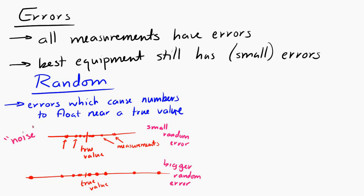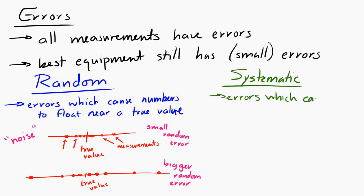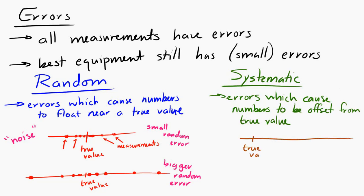The other category — systematic errors — are the errors which cause measurements to be offset from the true value. So let's say 25 students measure the length of the string using the same meter stick, but it's a crummy meter stick we found on the ground somewhere, and it gives readings which are always too small. Then all the students, even if they're very, very careful, will get measurements smaller than the true value. Systematic errors are often caused by a faulty instrument, like that meter stick.